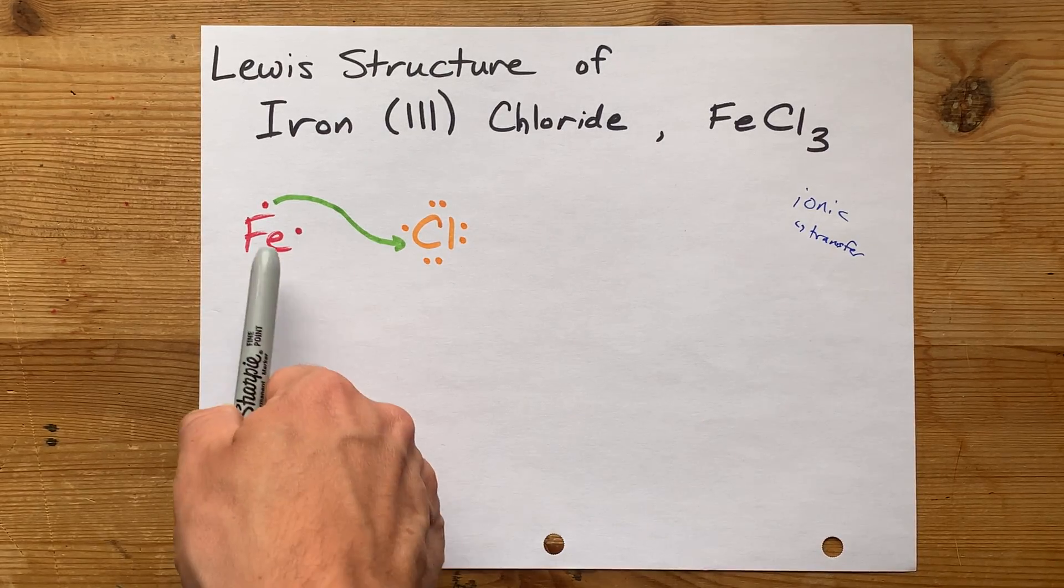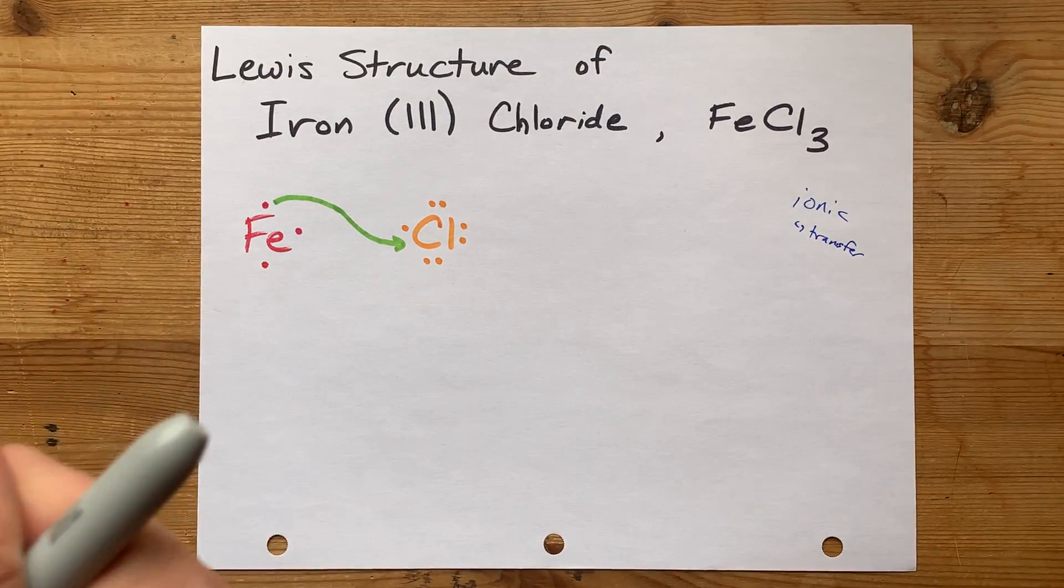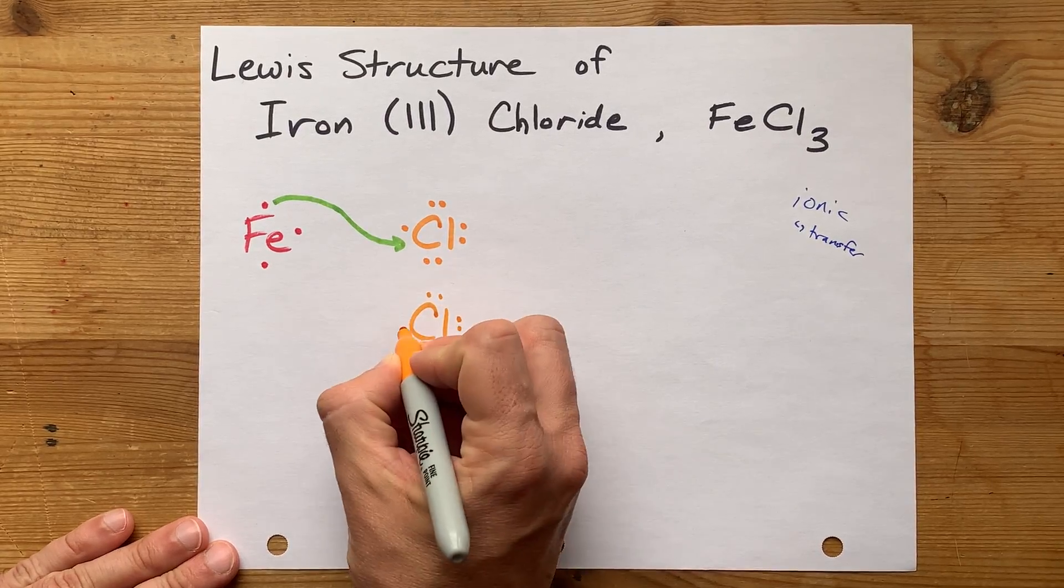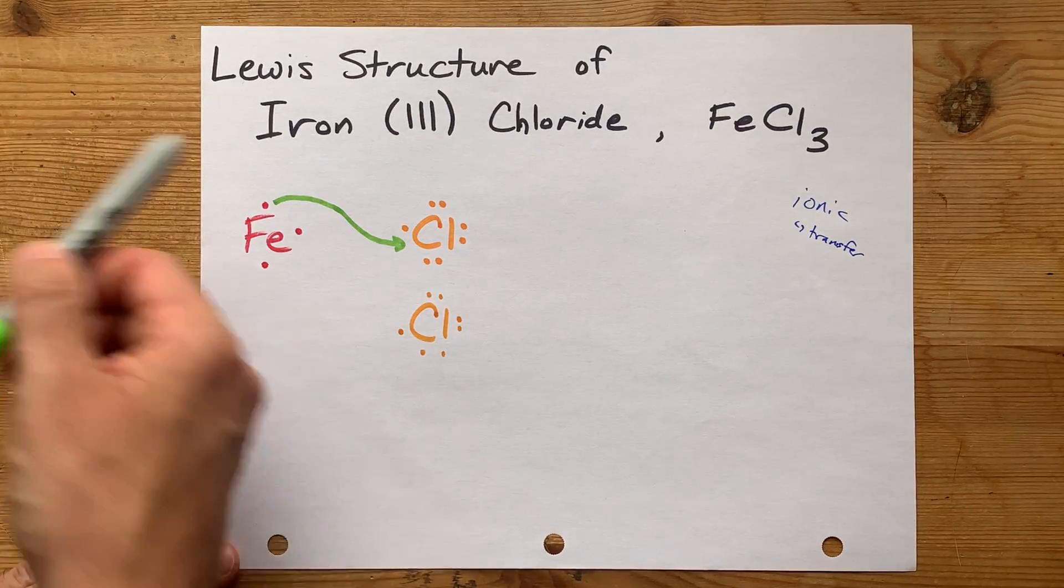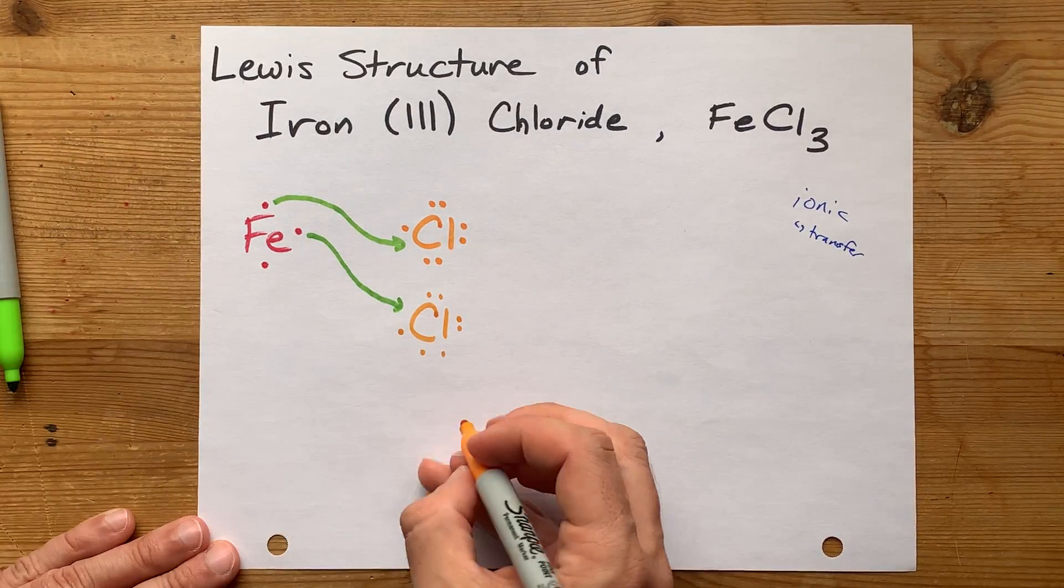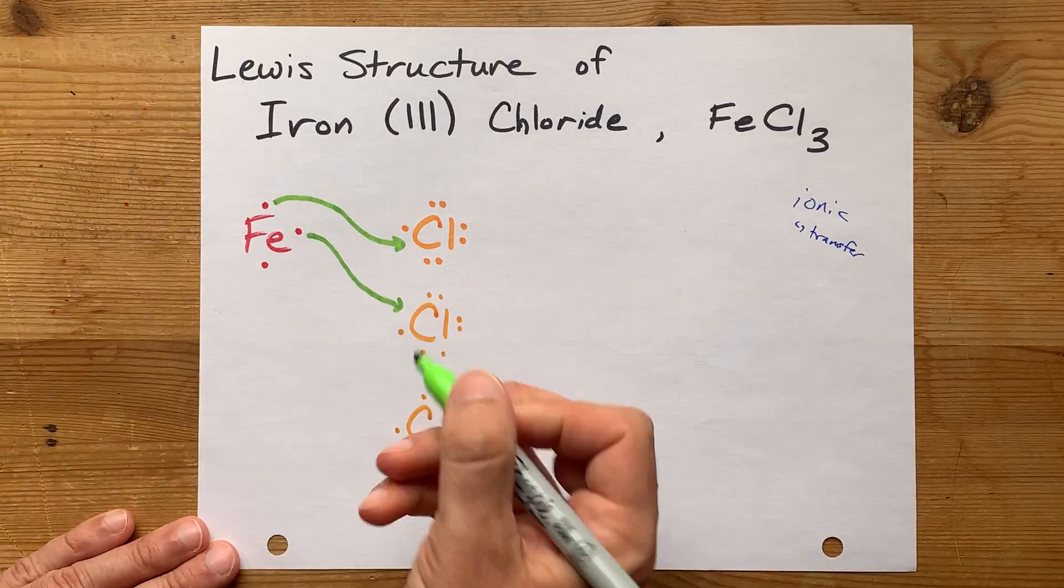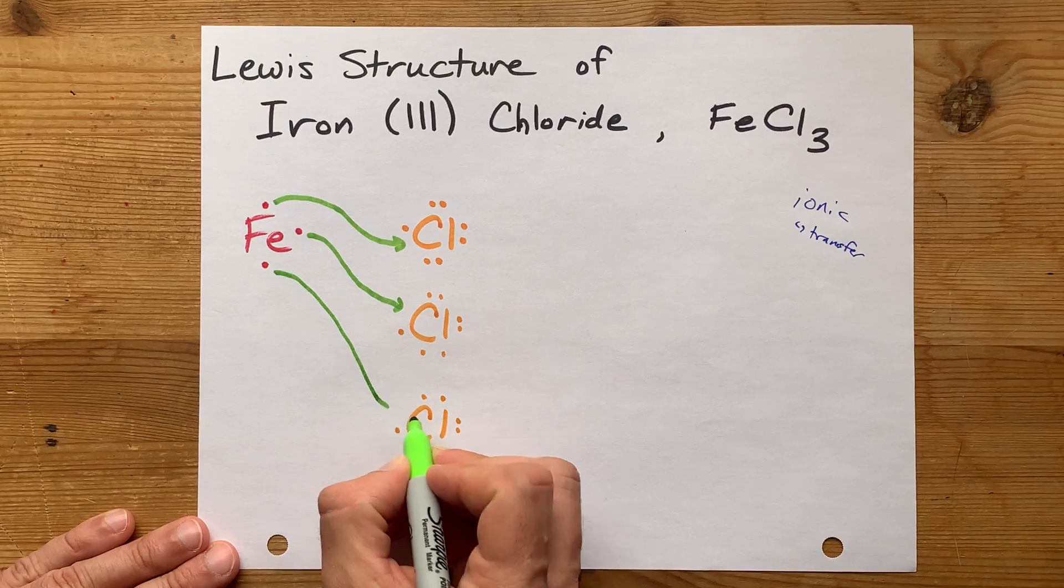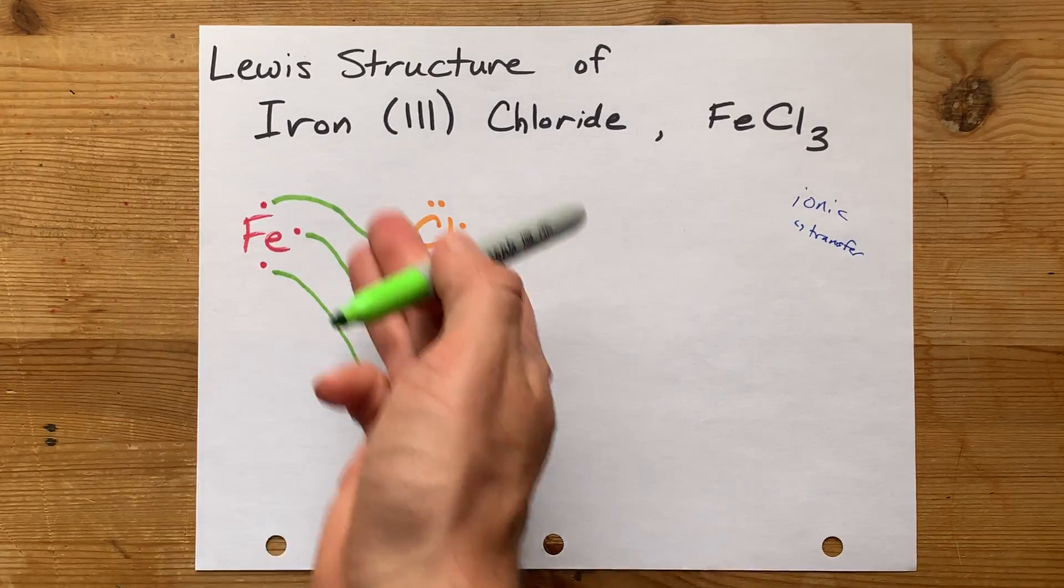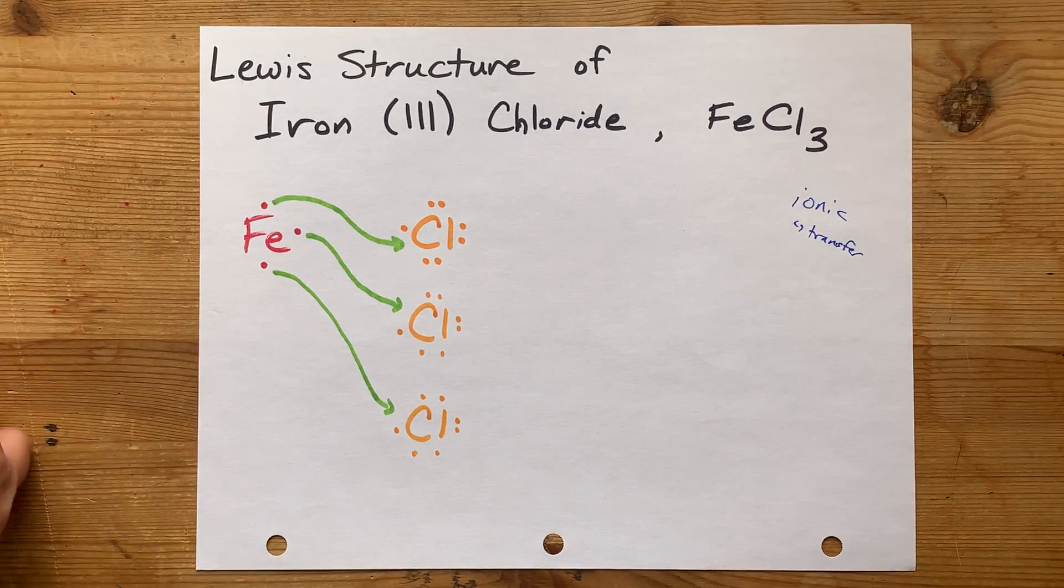The problem is that this iron here is not yet stable because it still has valence electrons. So, I want you to draw as many chlorines as you require, 7 electrons each, to absorb all of the electrons from iron. Now, this iron only has 3 valence electrons, so you only need 3 chlorines. But if, for some reason, your metal had a plus 7 charge, you'd probably need 7 different chlorines to accept those electrons.